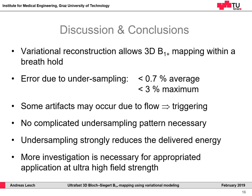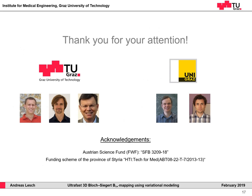No complicated undersampling pattern is necessary to apply this method — sampling a simple block in the k-space center is sufficient. Undersampling further strongly reduces the delivered energy, leading to better SAR behavior. Due to the higher field variations and the SAR problem at 7 Tesla, more investigation is necessary for an application of this method at ultra-high field strength. With that, I would like to conclude and thank you for listening.